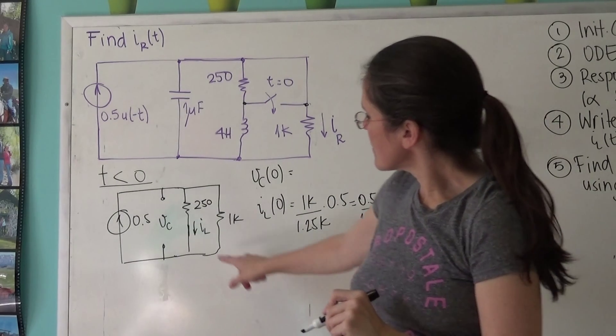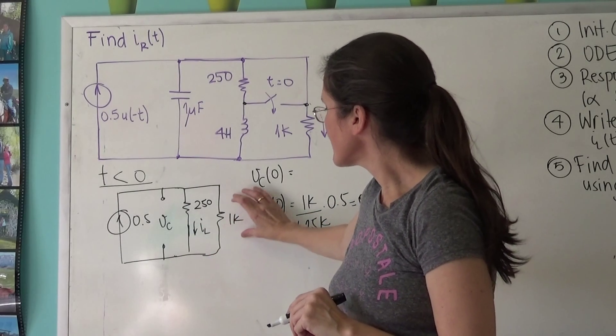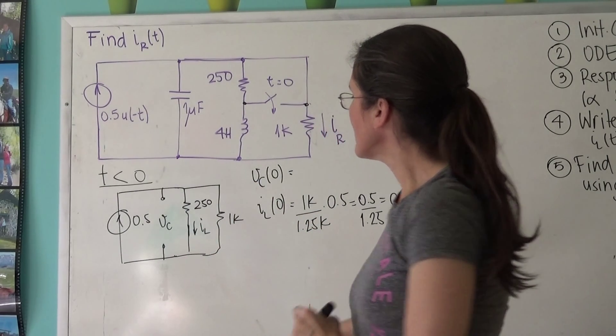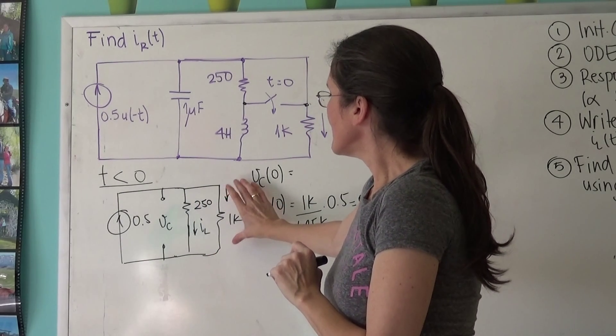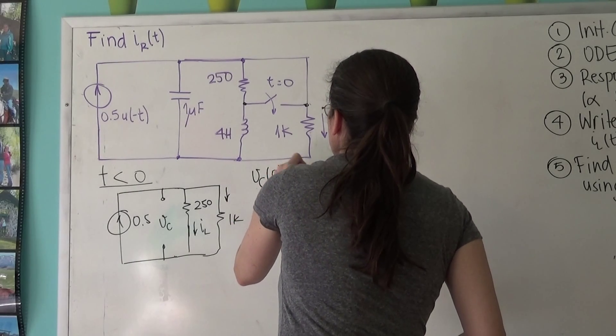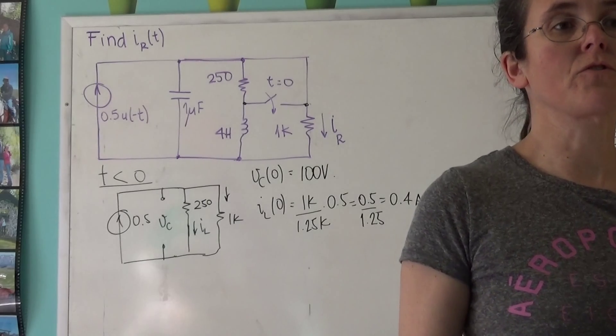So given that this is 0.4 amps, this is 0.1 times 1k. So there is a 0.1 amp current coming through the 1k. And therefore, the voltage here is 100 volts. And now we're going to do T larger than zero.